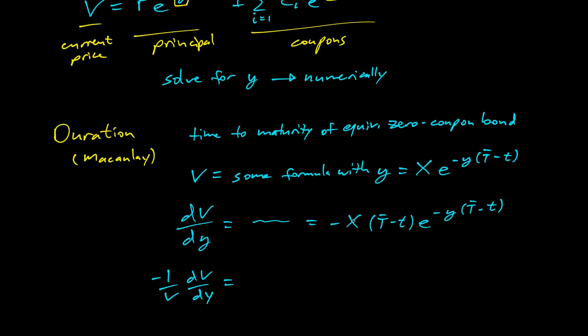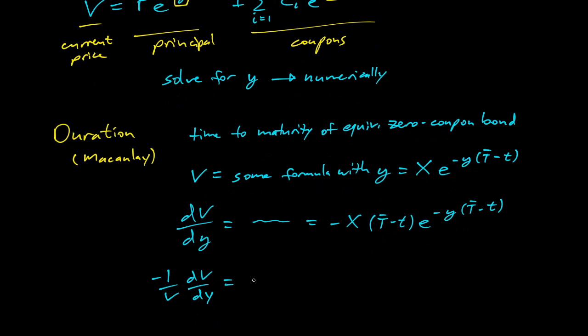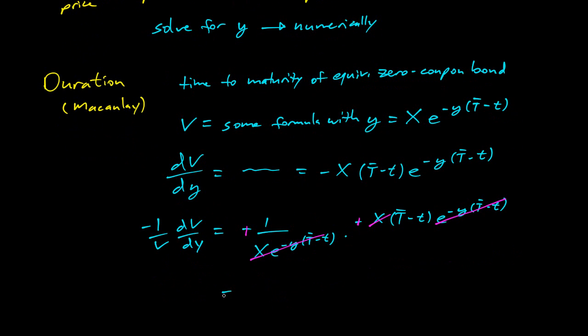Looking over here at the equivalent zero coupon bond, that's negative one over X e to the negative Y times T bar minus T, times negative X times T bar minus T e to the negative Y times T bar minus T. And so that whole thing equals T bar minus T. And that's precisely the Macaulay duration.